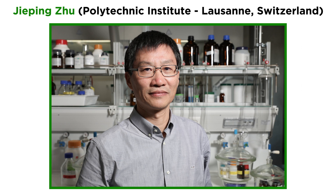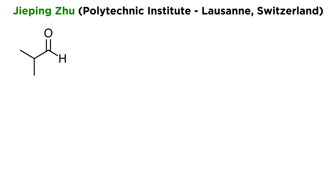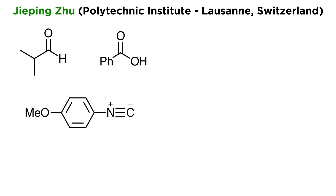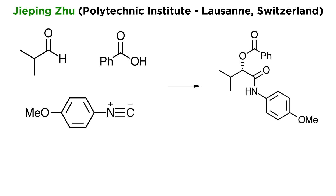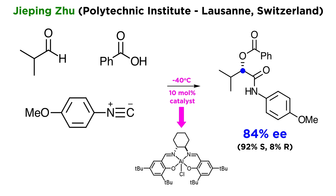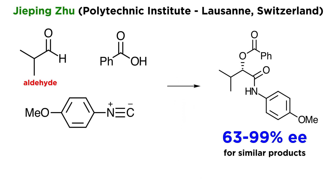Among the many successful applications, we will refer to the work of Professor Ji-Ping Zhu at the Polytechnic Institute in Lausanne, Switzerland. This time we are using a 4-carbon aldehyde, benzoic acid, and a particular isonitrile, leading again to an alpha-acyloxyamide. With this particular example, the product is obtained in 84% enantiomeric excess, which means one obtains 92% of the S enantiomer and only 8% of the R, using 10 mol% of a chiral aluminum catalyst, which has the structure shown here. Note that with the catalyst, the reaction is now so fast that it can be run at negative 40 degrees Celsius. The reaction works only for aldehydes, and within this constraint, the EE ranges from 63% to 99% for a series of similar products. These results are quite good, but not yet completely satisfactory. Thus, the search for the ideal catalyst continues.